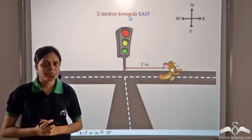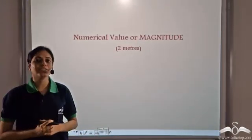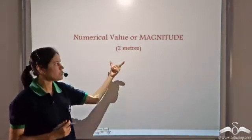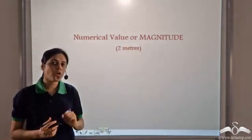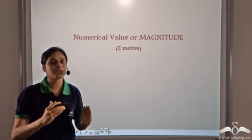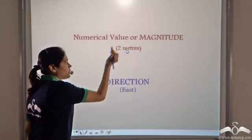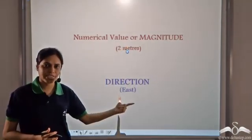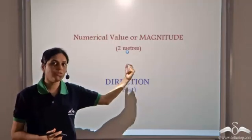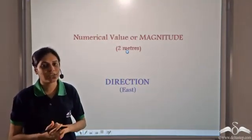So what we see is that only the numerical value or magnitude — which is 2 meters here — is not sufficient to describe the complete position of Jerry. We also require direction, which is east. So along with the numerical value or magnitude, we require direction to describe Jerry's position.